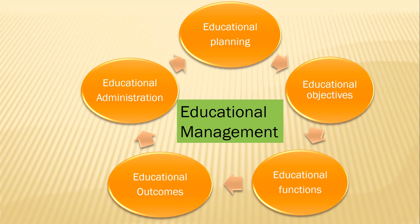The process of educational management can be studied in these five steps: Educational Planning, Educational Objectives, Educational Functions, Educational Outcomes, and Educational Administration.